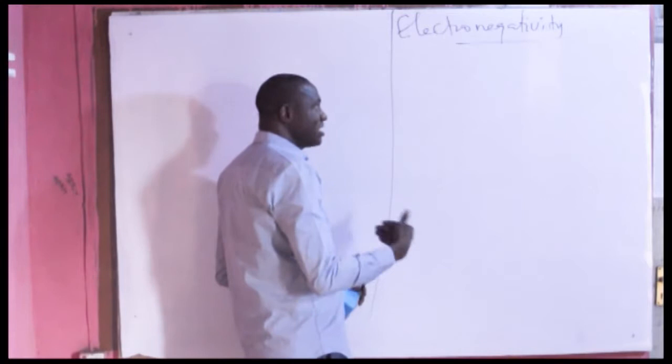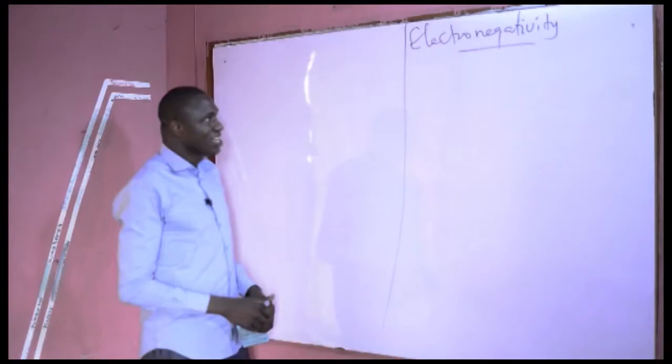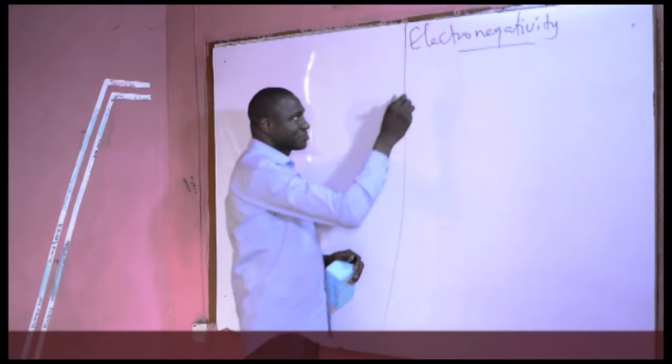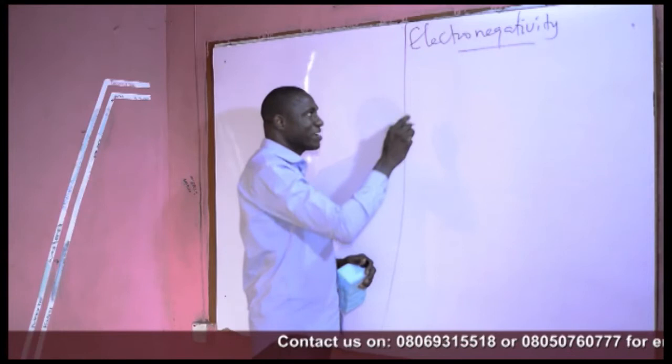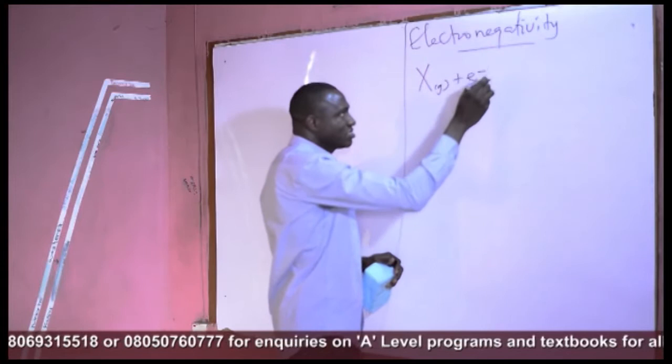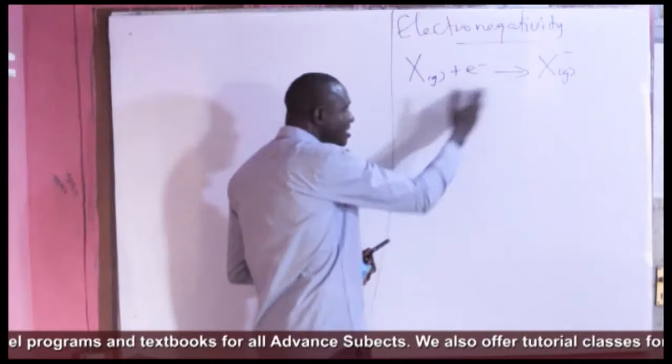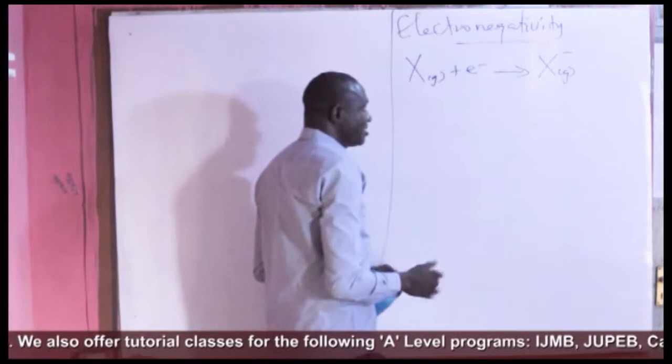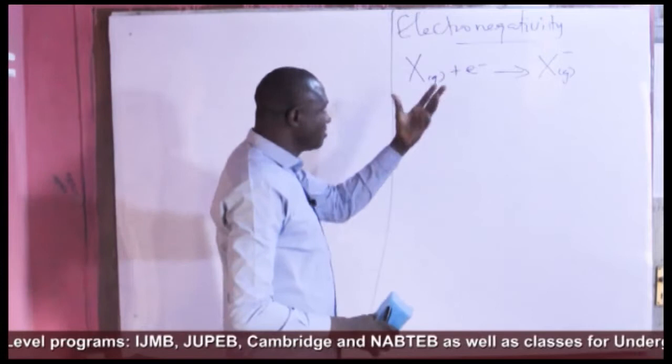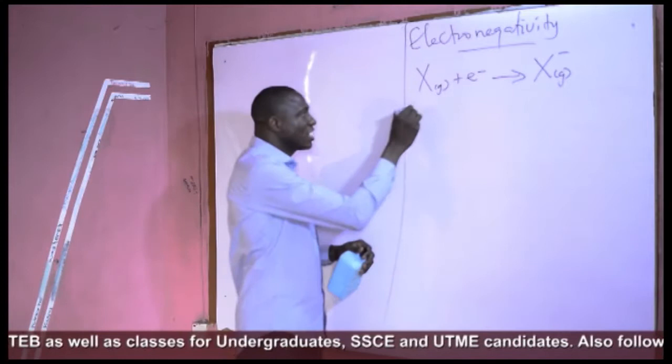When we discussed electron affinity, I gave the example of an element X in a gaseous state attracting electrons to itself to form an ion in the gaseous state. The energy released in that process is called electron affinity, which is usually negative, while the ability of the atom to attract the electron to itself is referred to as electronegativity. The opposite of electronegativity is what we call electropositivity.